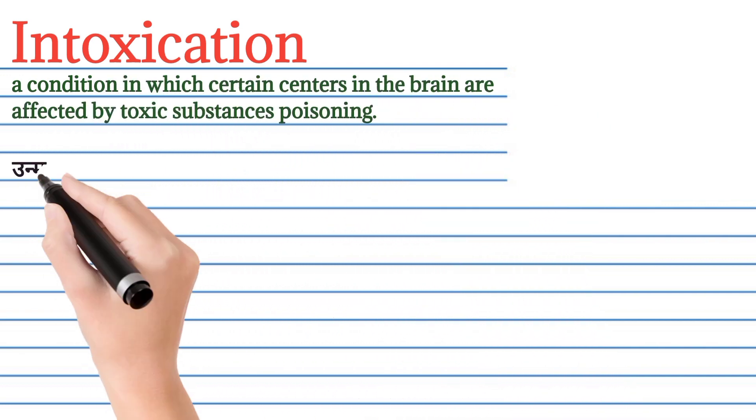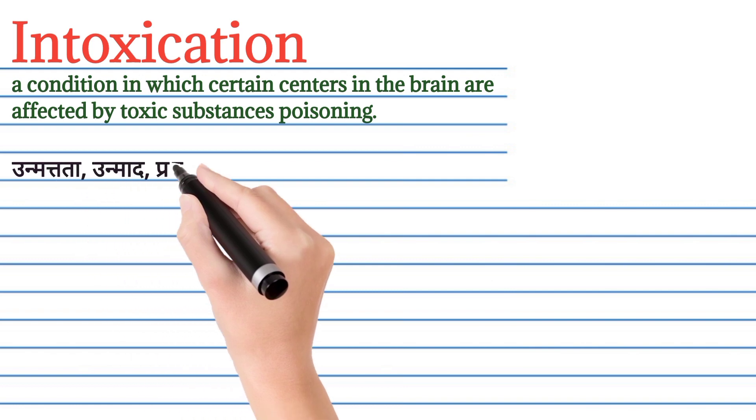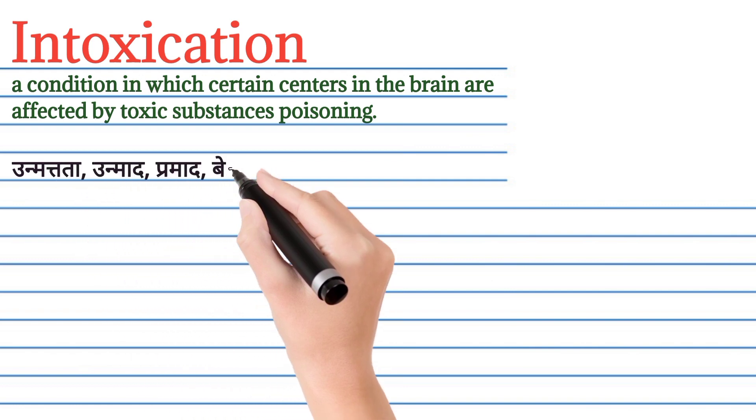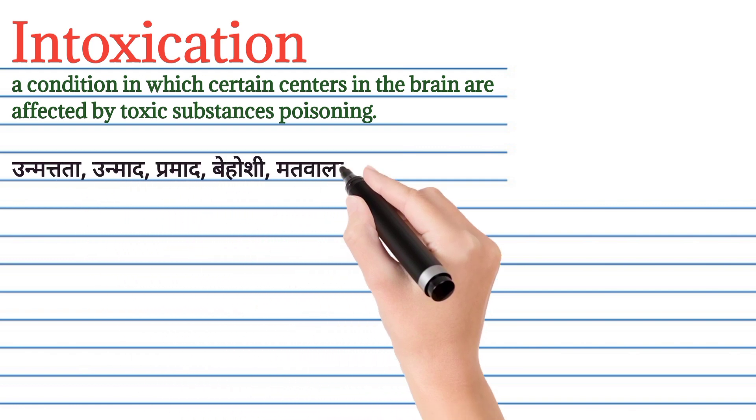Intoxication ka matlab English mein: a condition in which certain centers in the brain are affected by toxic substances — poisoning.